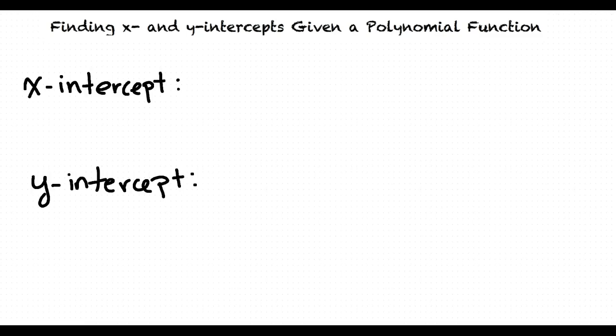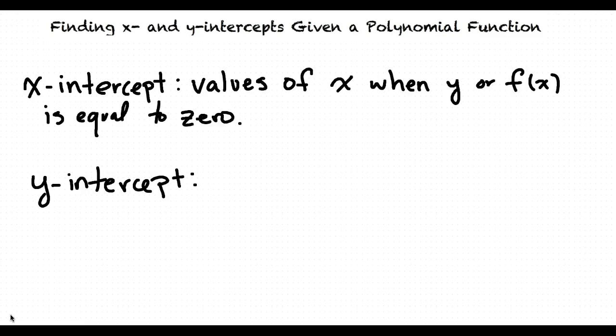Before we get started, let's quickly review the definition of x and y-intercepts. An x-intercept is a point where the graph of the function intersects the x-axis. In other words, possible values of x when y or f(x) equals 0.